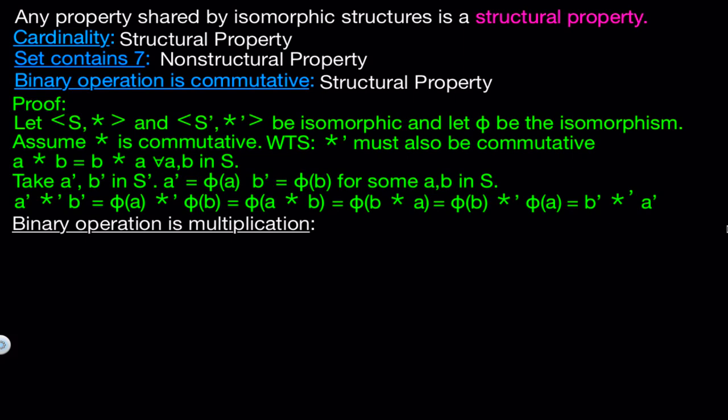Now what about if the operation is called multiplication? This one is not a structural property because this is just the name of the operation. For example, we can show that the structure containing the positive real numbers along with the operation multiplication is actually isomorphic to the structure containing all the real numbers with the operation addition. So even though we usually consider addition and multiplication as very different, in the context of this example they are actually the same binary operation structurally.